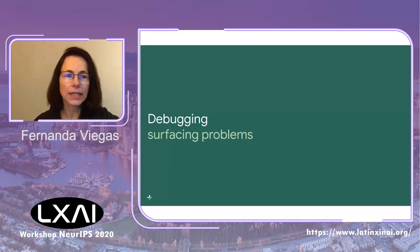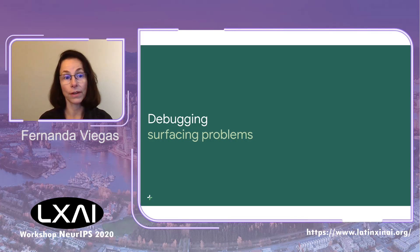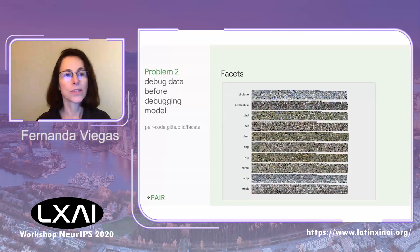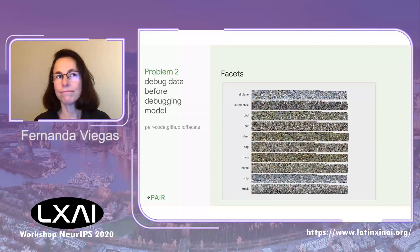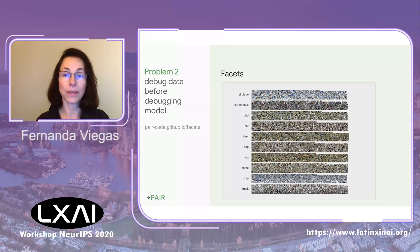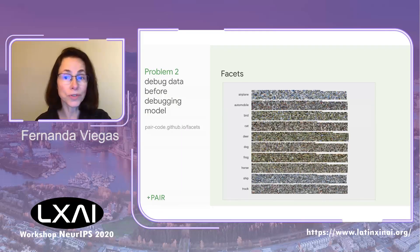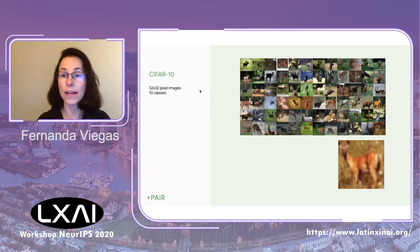Now let's go to our second example: data visualization for debugging datasets. One of the intuitions that is usually wrong is that when a machine learning system does something wrong, engineers try to debug the model. At PAIR we say: debug your data first before debugging your model. But the problem is we don't have good tools to debug data. What I want to show you now is Facets — a tool we created to visualize training data.